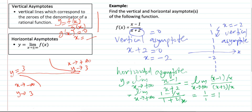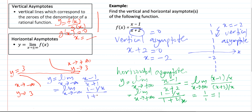Now, we do the same for x approaches minus infinity. y equal to the limit as x approaches minus infinity of (x minus 1) over (x plus 2). Dividing through by x, we get the limit as x approaches minus infinity of (1 minus 1/x) over (1 plus 2/x), which is also equal to 1. So, y equal to 1 is the only horizontal asymptote.